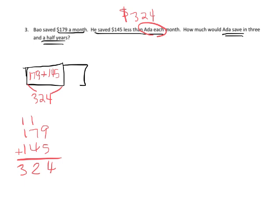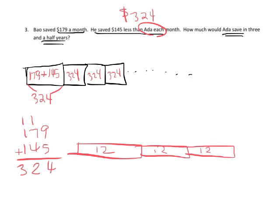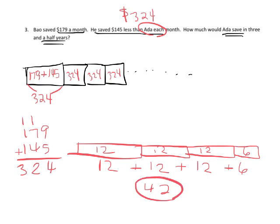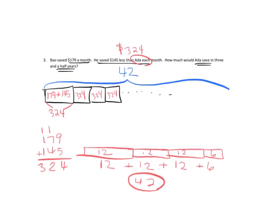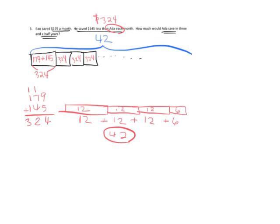Month after month Ada is saving $324 a month. The question is how much would Ada save in three and a half years? One year has 12 months, another year 12 months, another year 12 months, and then the half year has 6 months. So 12 plus 12 plus 12 is 36, plus another 6, equals 42 months altogether. So Ada is going to save money for 42 months, and we want to know how much — so we're going to do 324 times 42.